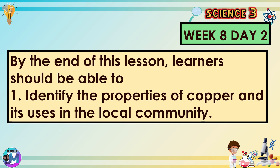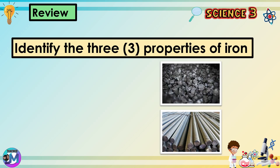By the end of this lesson, learners should be able to: 1. Identify the properties of copper and its uses in the local community. 2. Identify the three properties of iron.